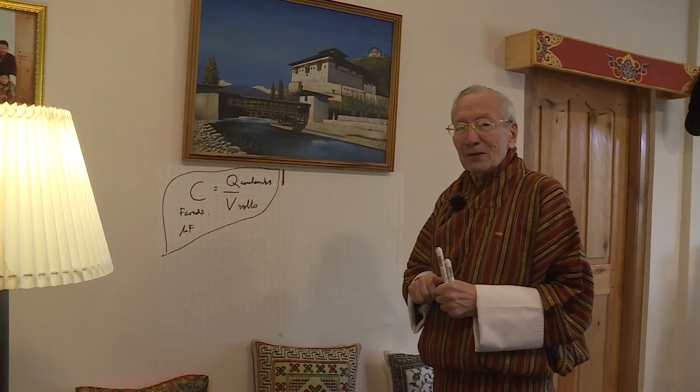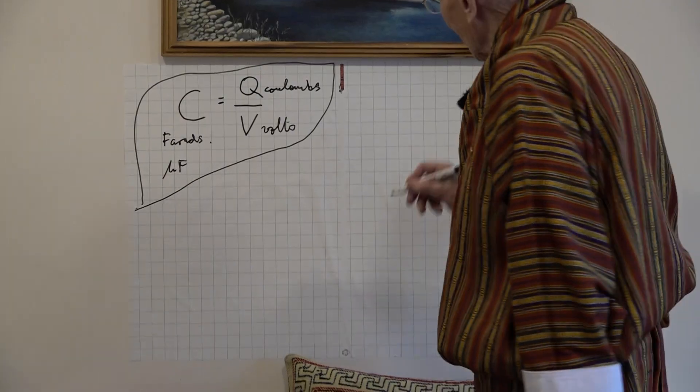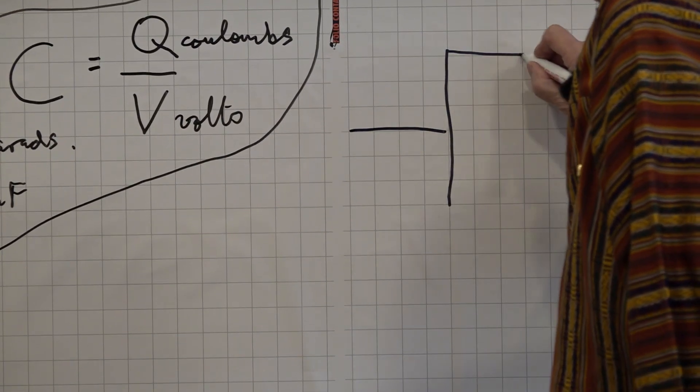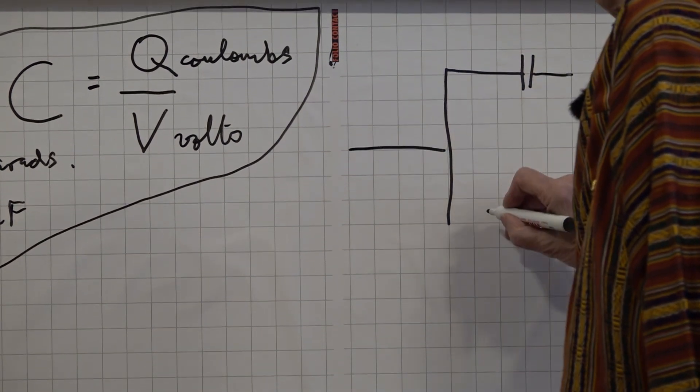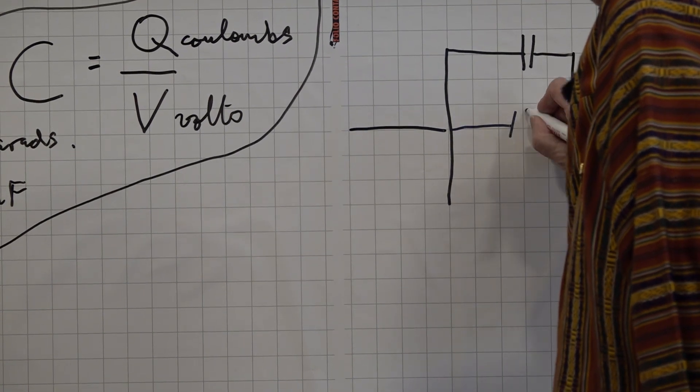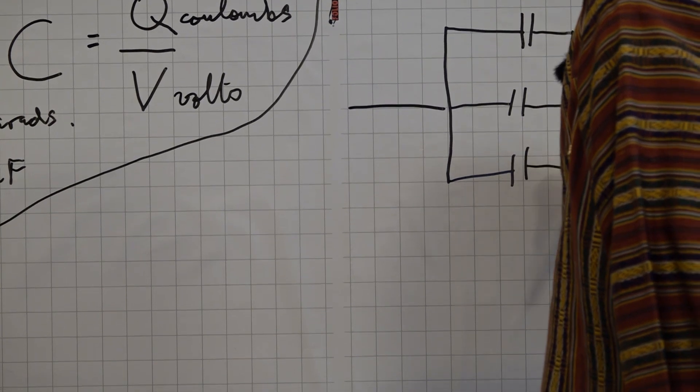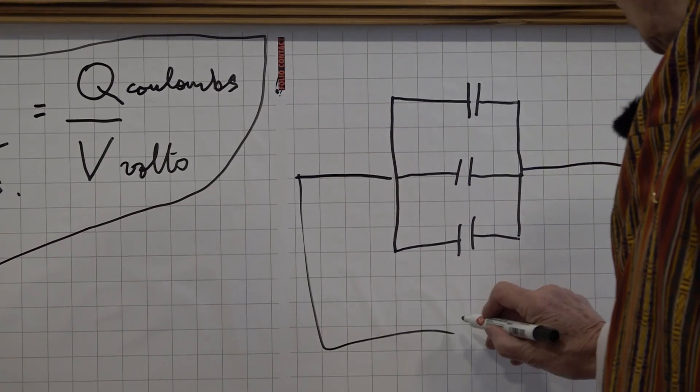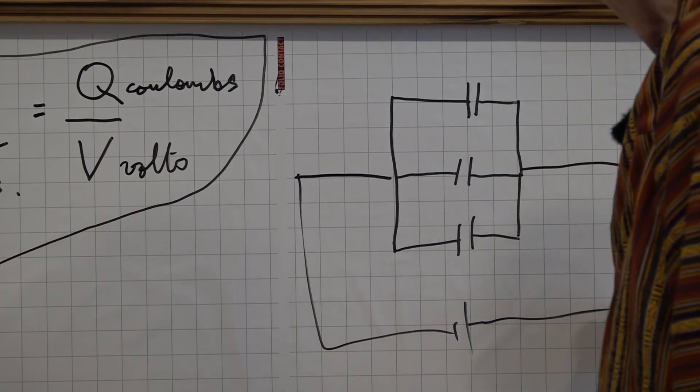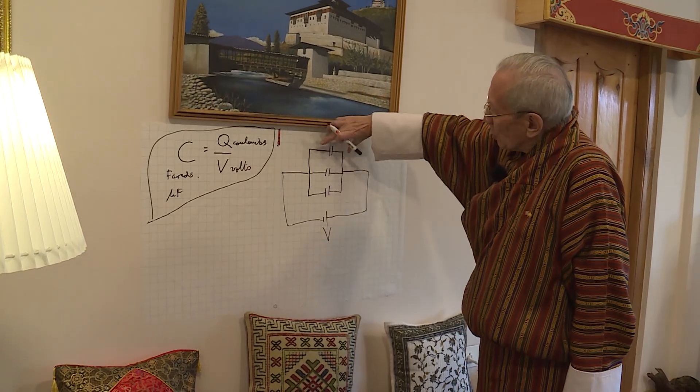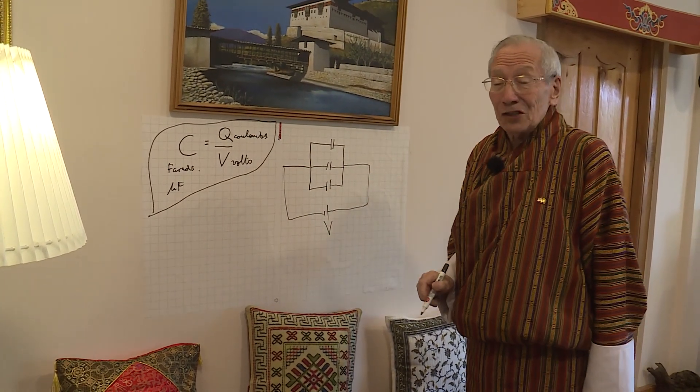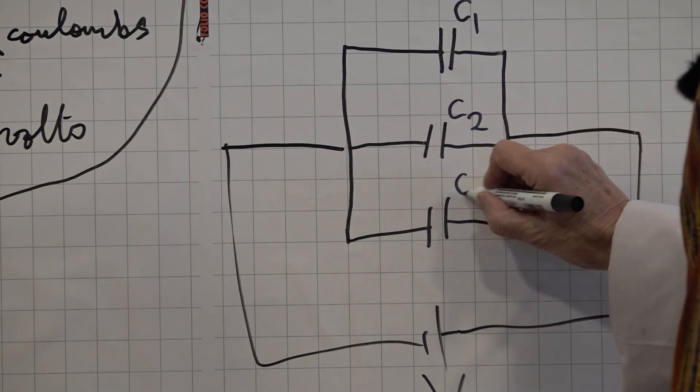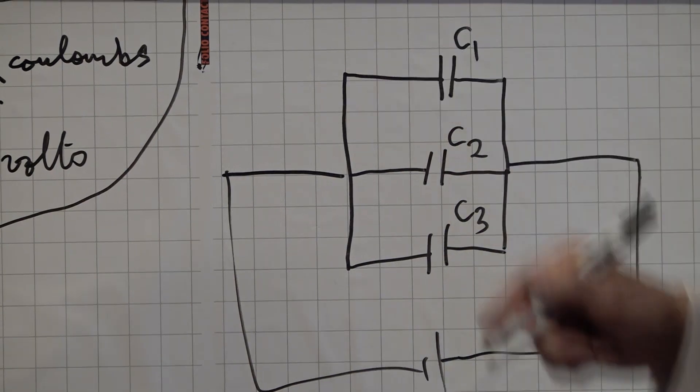First of all, let's think about connecting them together in parallel. Wire, wire, one capacitor, two capacitors, three capacitors. They're connected together in parallel, and we're going to charge them up by a battery with a voltage V. So, the voltage across each capacitor, because they're in parallel, the voltage across each capacitor is V. Let's call that capacitor C1, C2, and C3.